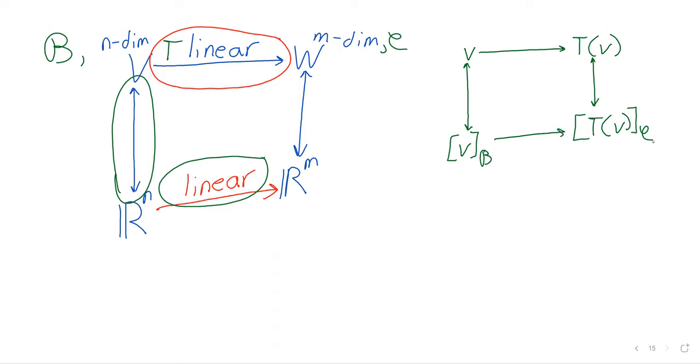what this linear transformation should be doing. This linear transformation should take the coordinate vector of V with respect to that basis, and it should map it to the coordinate vector of T of V with respect to that other basis, C.